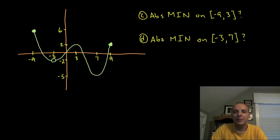Part C, what would be the absolute minimum on the interval negative nine to three? So we're just looking at this little highlighted portion here from negative nine to three and everywhere in the middle, and I'm looking for the lowest y value possible.